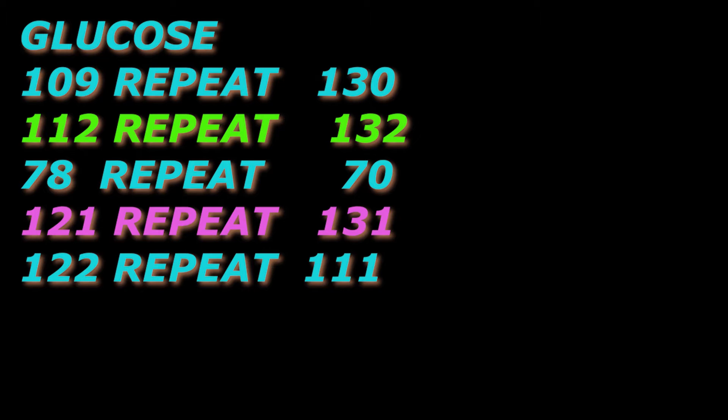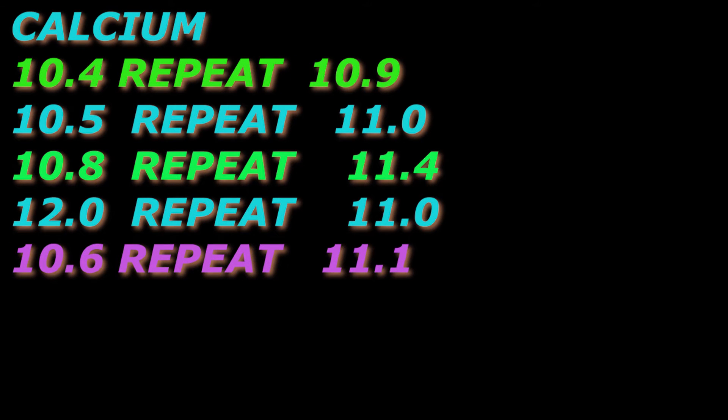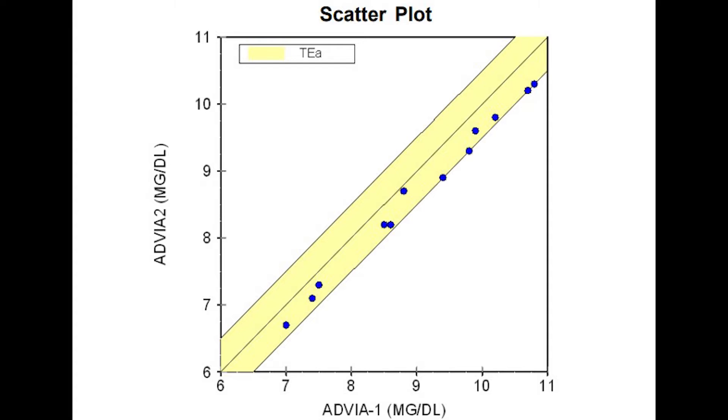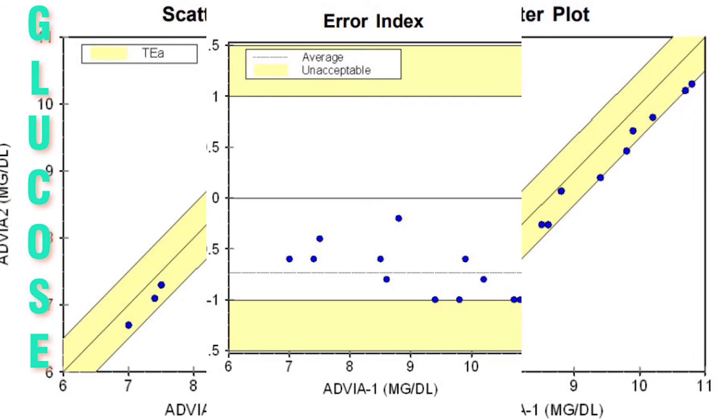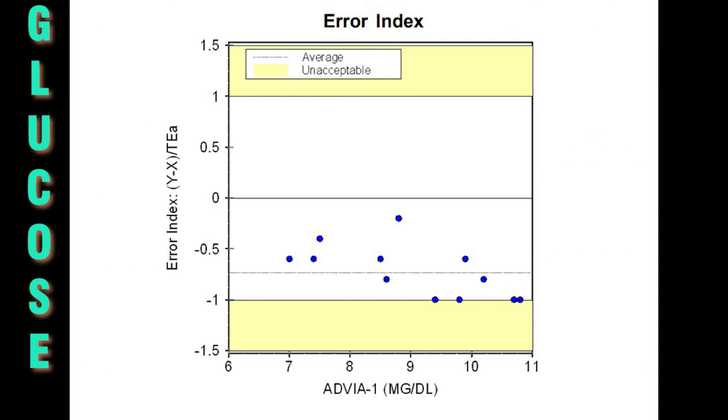When we repeat a test we do not run the test on the same instrument. We may run it on any instrument. This difference between instruments is crucial when the results are in the borderline of reference range.